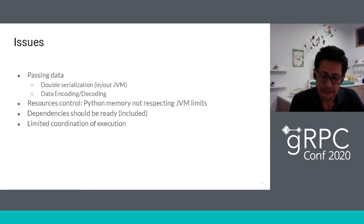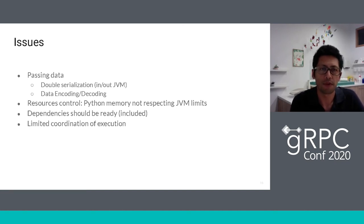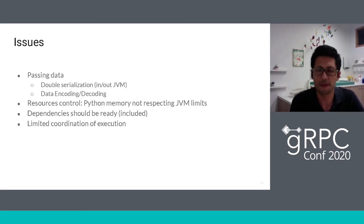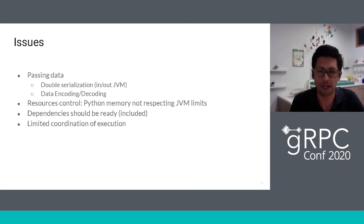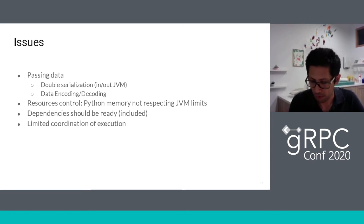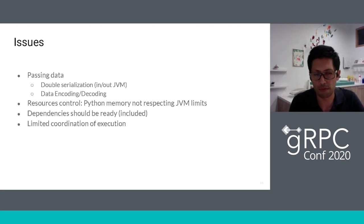To tackle this, Beam created what we call the Portability Framework. The main goal is to handle how to execute any language in every runner, in every existing system. We have constraints: we must support Java and Python for historical reasons. We also have to provide an expected execution environment with the core dependencies. We expect no big overhead — performance is going to be important.